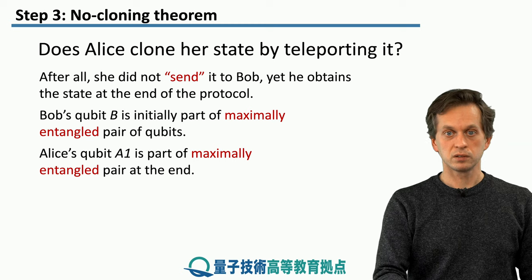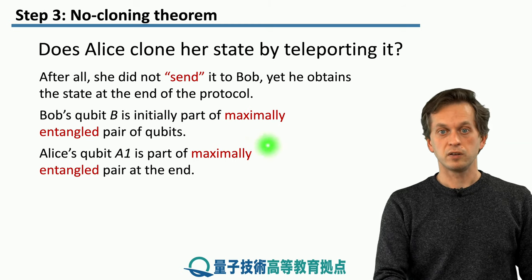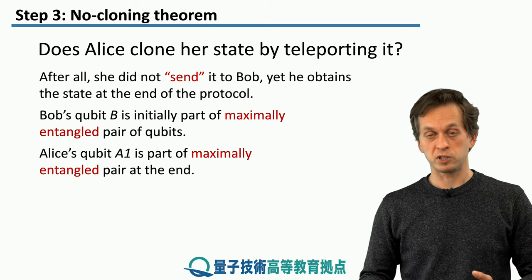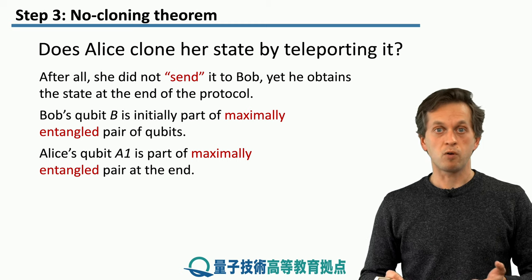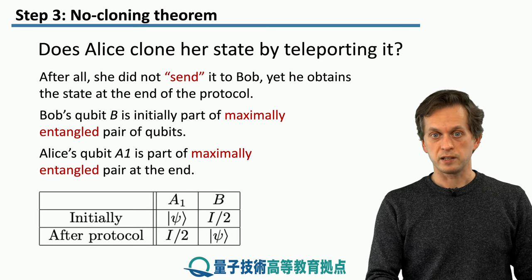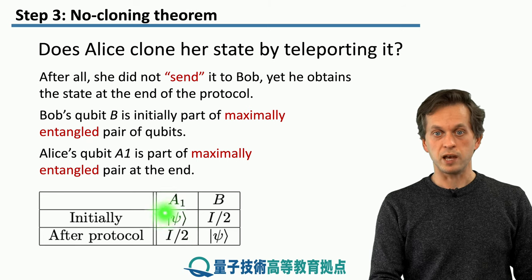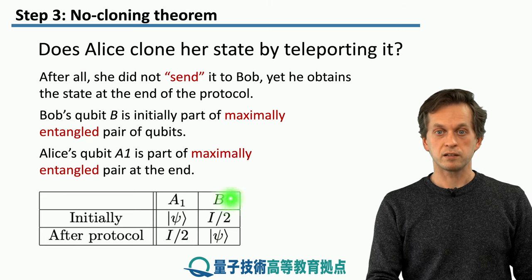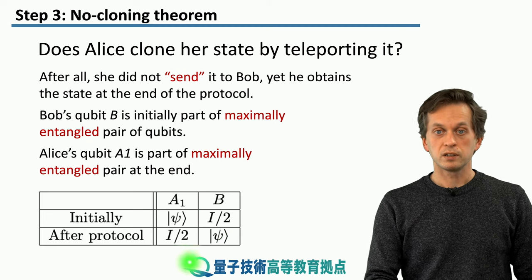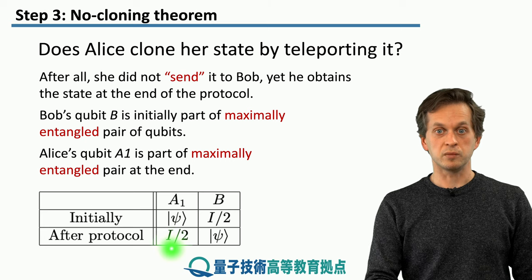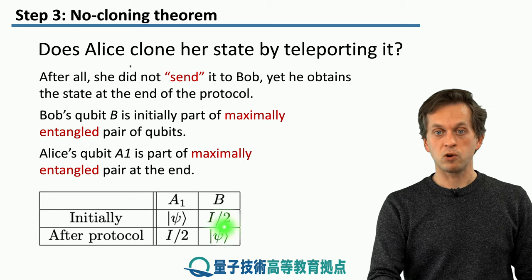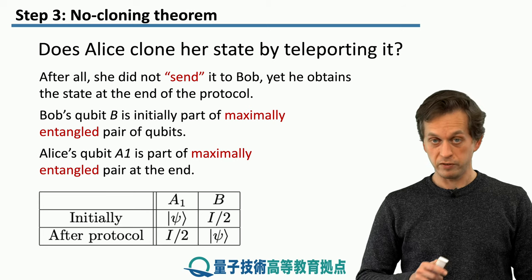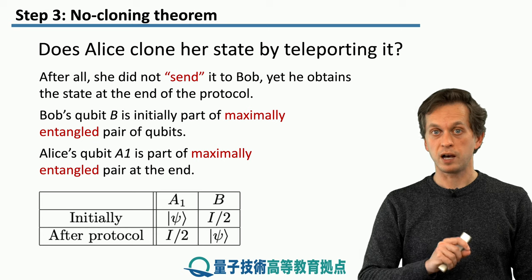At the end of the protocol, Alice's qubit A1 was part of a maximally entangled state. She performed her measurement in the Bell basis and that projected her two qubits onto one of the four possible Bell states, where all of them are maximally entangled. So initially the state of qubit A1 was psi, and the state of Bob's qubit was a maximally mixed state. After the protocol, the state of Alice's qubit A1 became the maximally mixed state, whereas Bob's qubit became the state psi. So we see that there was no cloning or copying of the state, even though there was no direct physical transmission of the state psi from Alice to Bob.